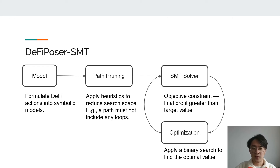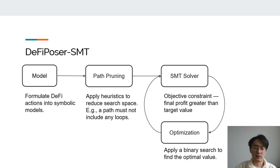We can brute-force search all possible paths and identify profitable ones. However, given the number of DeFi actions, this is computationally infeasible, so we apply heuristics to prune the number of paths — for example, a path should not include any loops. We recommend checking the paper for the complete description of our heuristics.